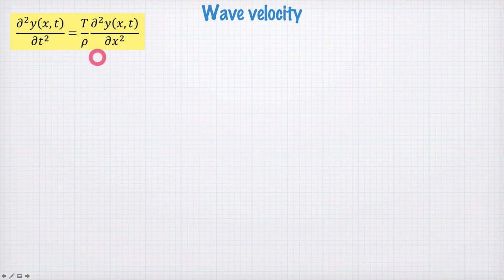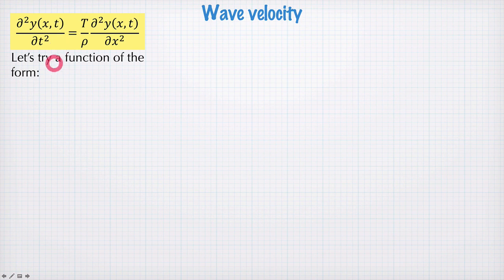Let's have a look at this wave equation now and see if we can figure out how fast a wave is going. So we're going to try a function of the form y(kx - ωt). This function we hope will solve our wave equation and we can check that pretty easily.